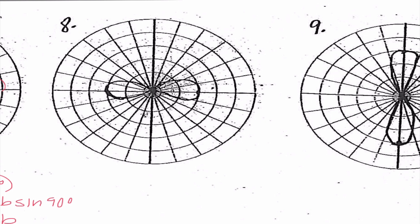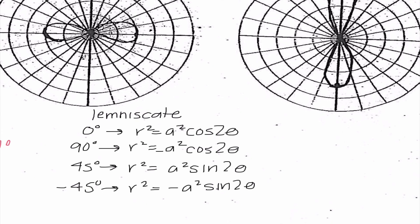Number eight definitely looks different — it's not a rose and it's not a limaçon. This is what we called a lemniscate. There are actually four different possibilities for lemniscates. With a lemniscate, we really need to pay attention to where the first petal is. Note that we always write r² and always use 2θ. If it's at 0 degrees, it is cosine and the a² term is positive. If at 90 degrees, it's cosine but negative a². If at 45 degrees, it's positive a² and sine. If at negative 45 degrees, it's negative a² and sine.